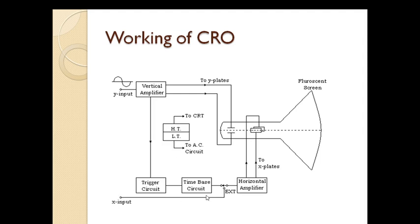For the X-plates, two types of signals can be provided: either an internal signal using the time-based circuit, or any signal of your choice through an external circuit. At one time only one signal can be given — either the sweep voltage through the time-based circuit internally, or any external signal, in which case the time-based circuit is switched off.